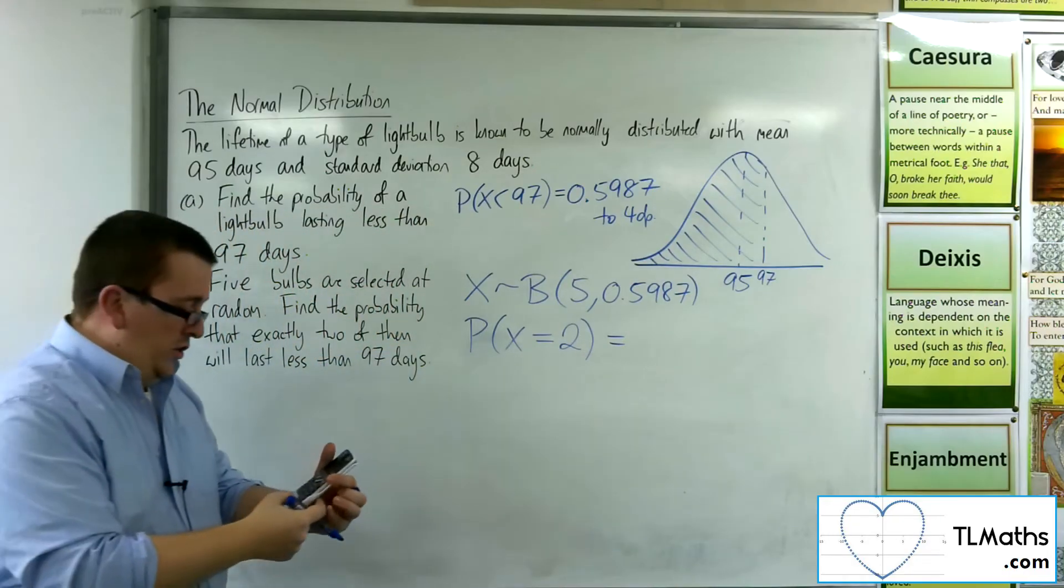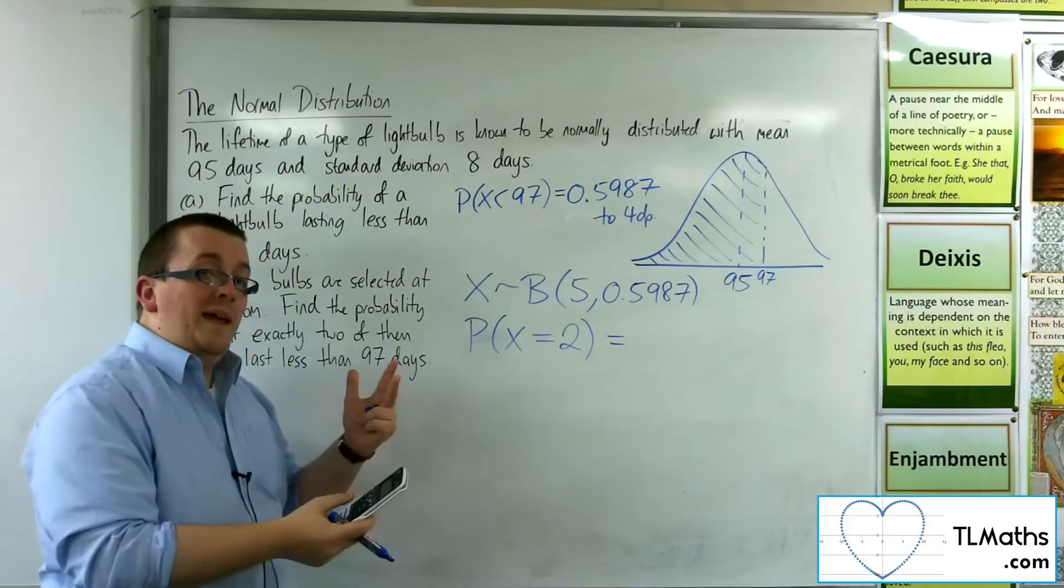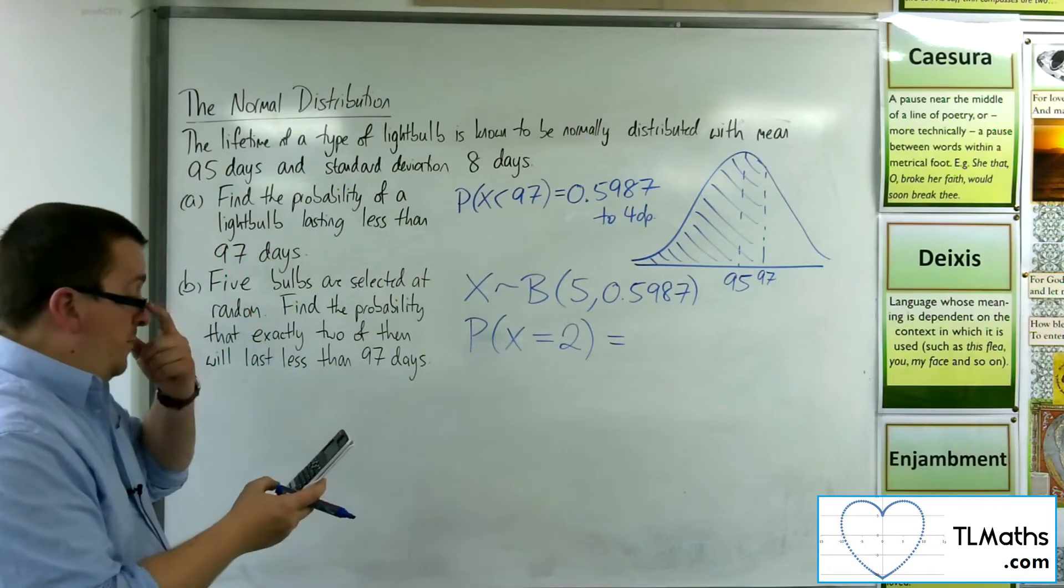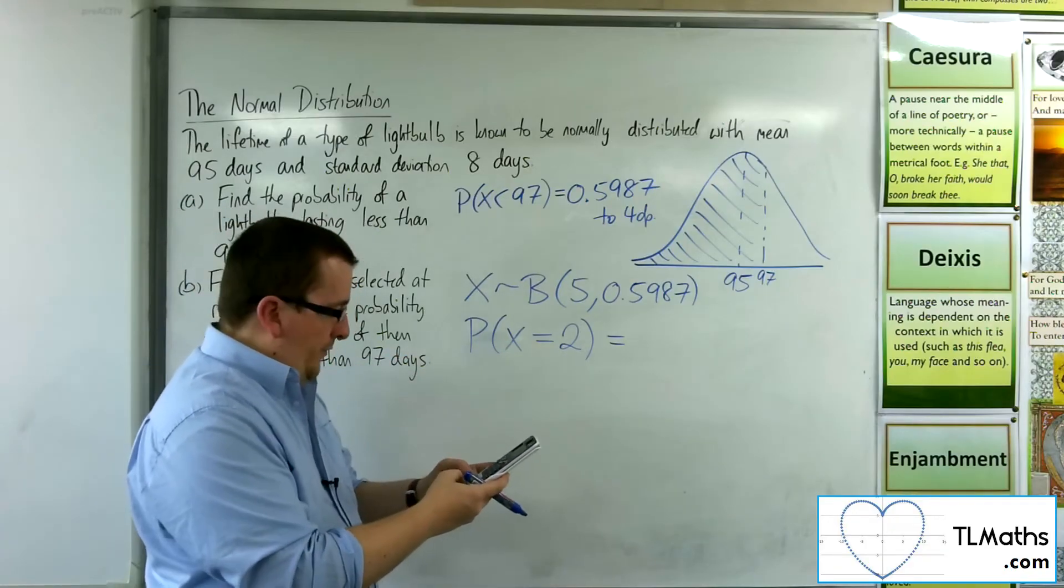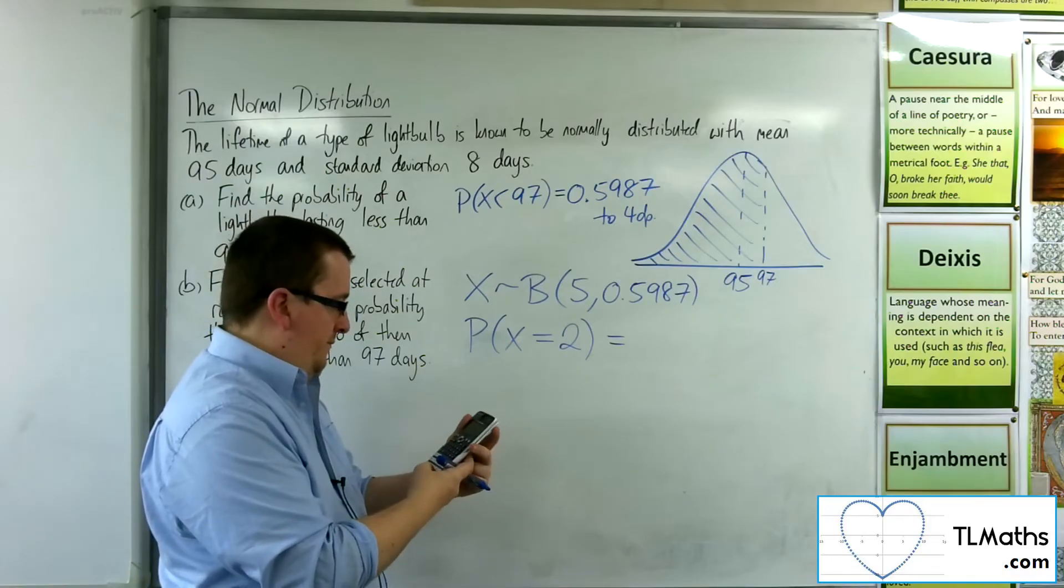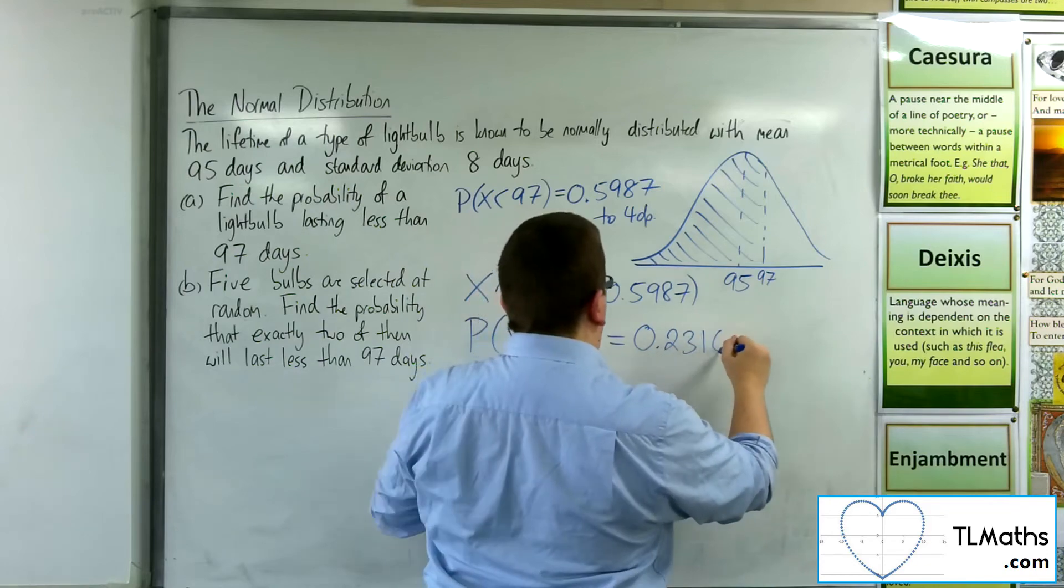So I can go into my calculator for binomial, so number seven, a binomial PD, option number four. Go to variable. The X value is two. N is five. And the probability is 0.5987. And we get 0.2316.